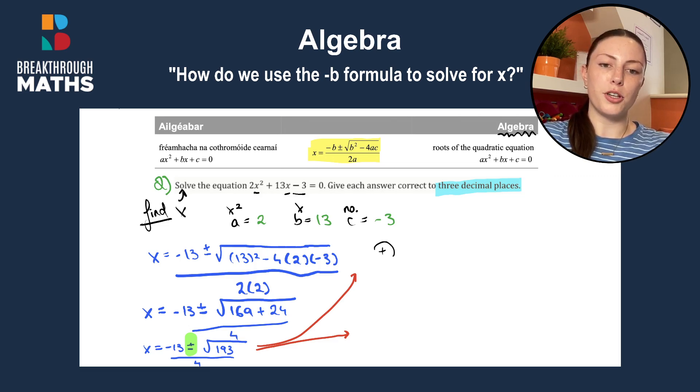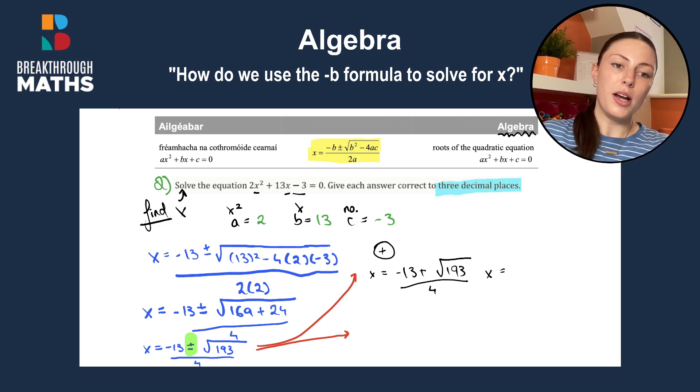So when we do the plus option first, we have x is going to be equal to minus 13 plus the square root of 193 divided by 4. And that gives you x is equal to 0.223, keeping it to three decimal places like they asked.